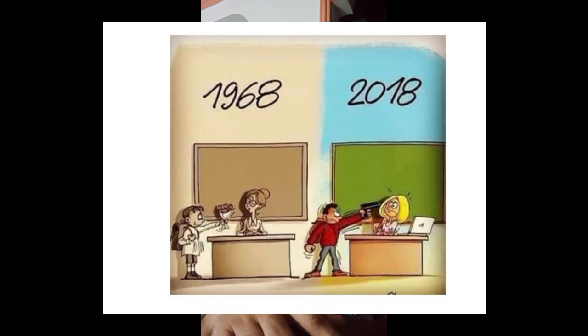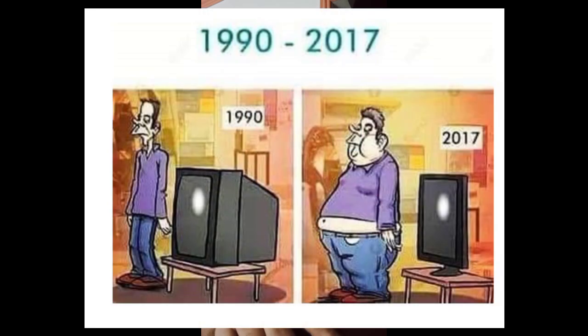Then we have 1968 — a female student — compared to 2018. And looking at TVs: in 1990 the TV was very large — I actually grew up with that. Now in 2017 the TV has gotten slim. The person grew bigger but the TV got thinner.